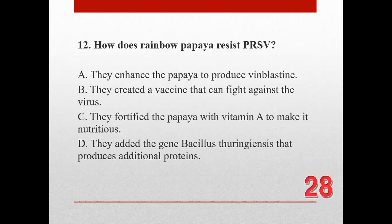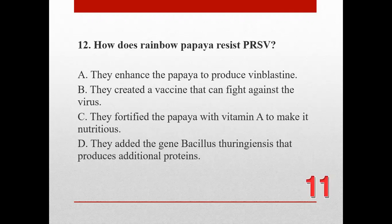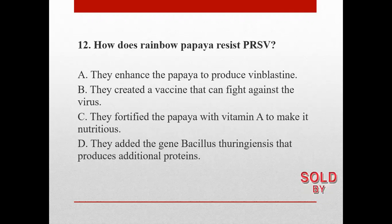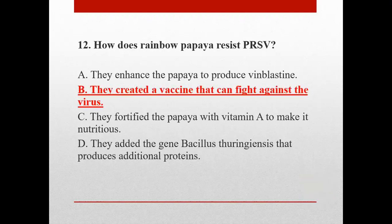Number twelve. How does rainbow papaya resist PRSV? A. They enhanced the papaya to produce vinblastin. B. They created a vaccine that can fight against the virus. C. They fortified the papaya with vitamin A to make it nutritious. D. They added the gene Bacillus thuringiensis that produces additional proteins. The correct answer is B. They created a vaccine that can fight against the virus.